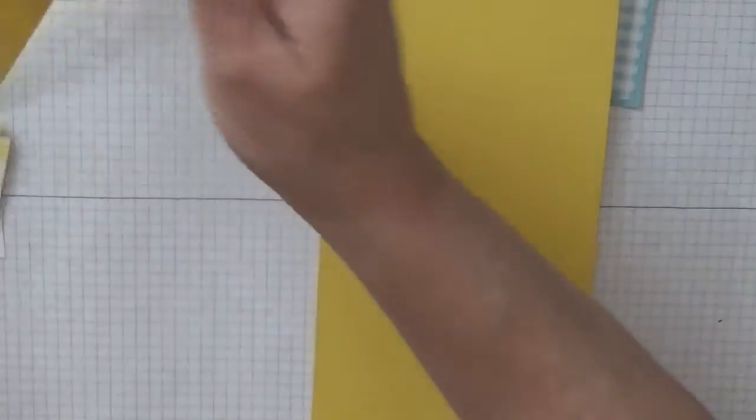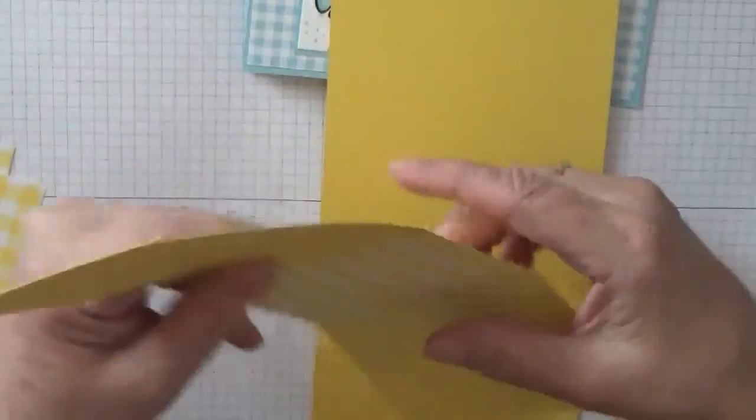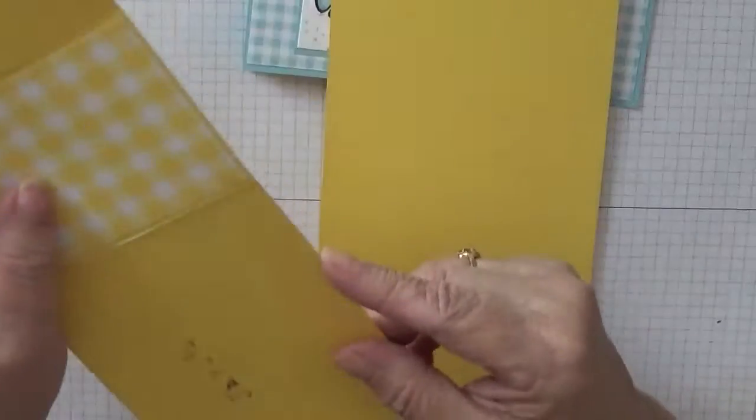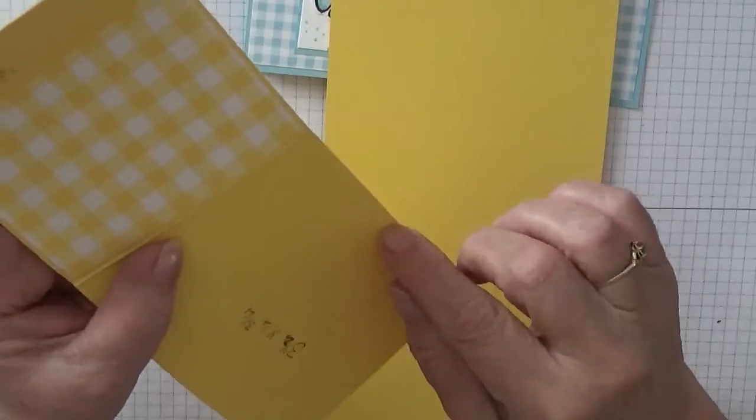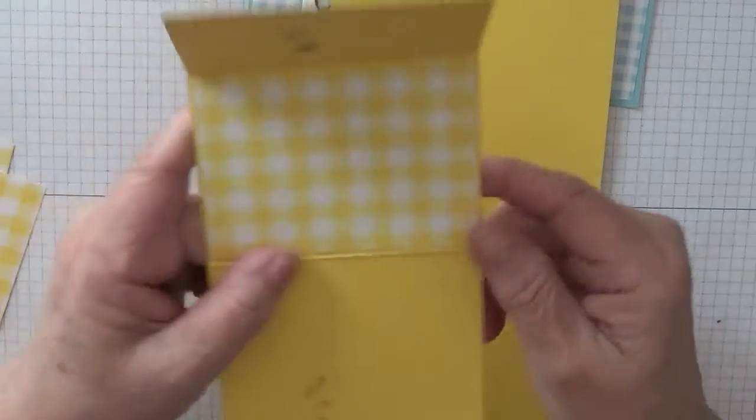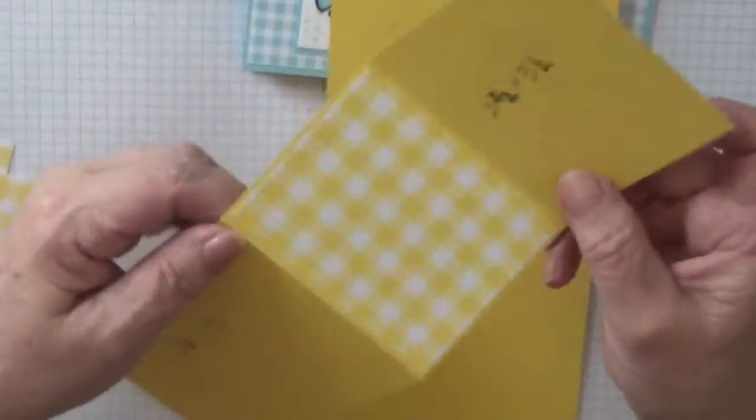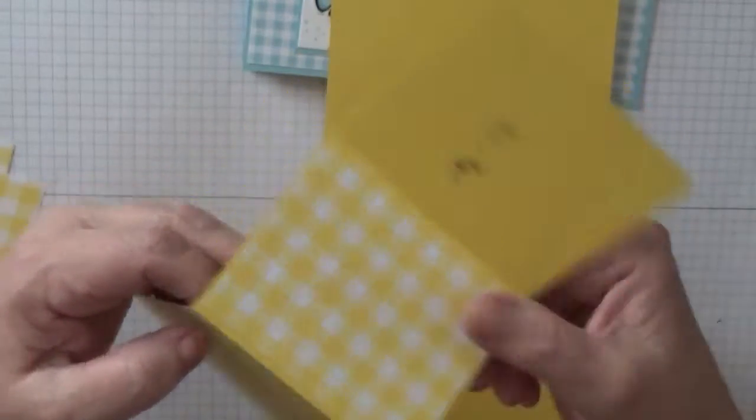You will also need another piece at ten and three-eighths by three and a half. I got carried away and stuck a piece of paper on there where I shouldn't have, and I've also scored it when I shouldn't have.